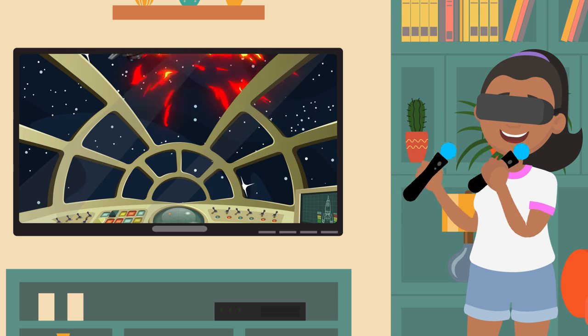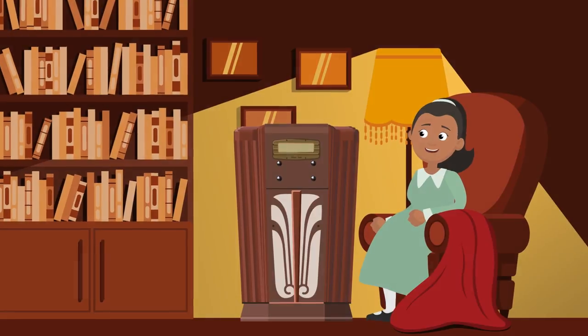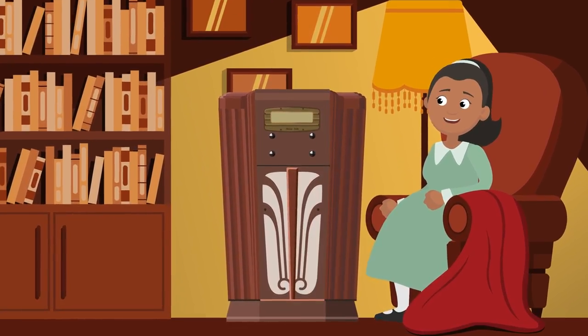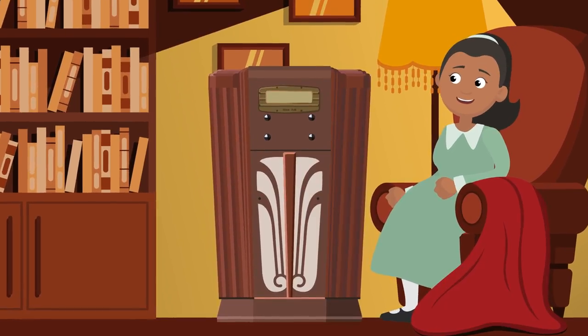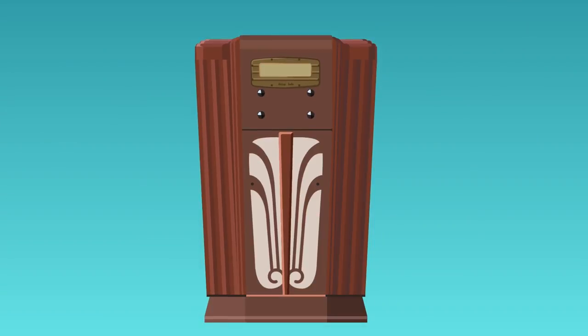The history of the TV goes back a bit further than you might think, to a time when the radio was the newest and most advanced form of mass entertainment. Around the 1920s, engineers and inventors started looking for ways to send pictures over the radio.